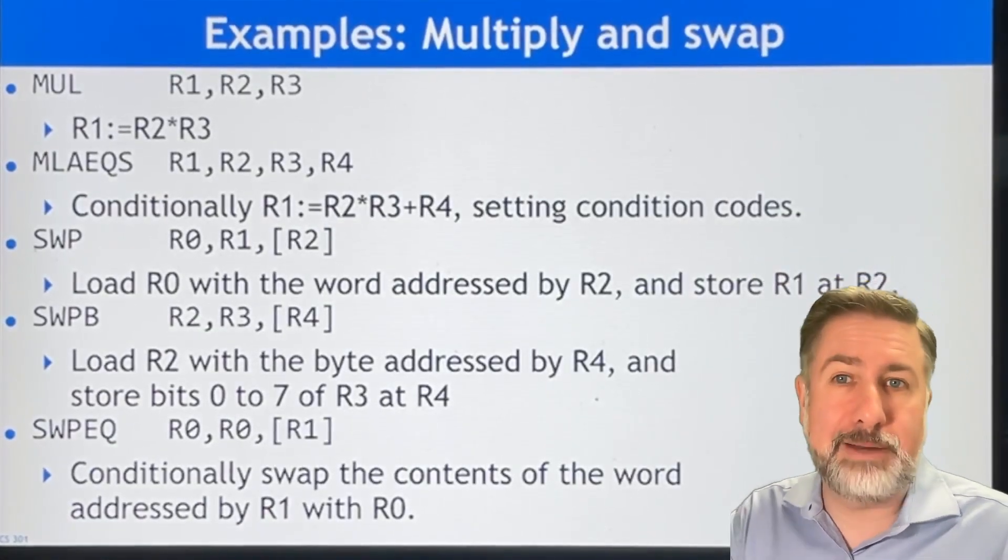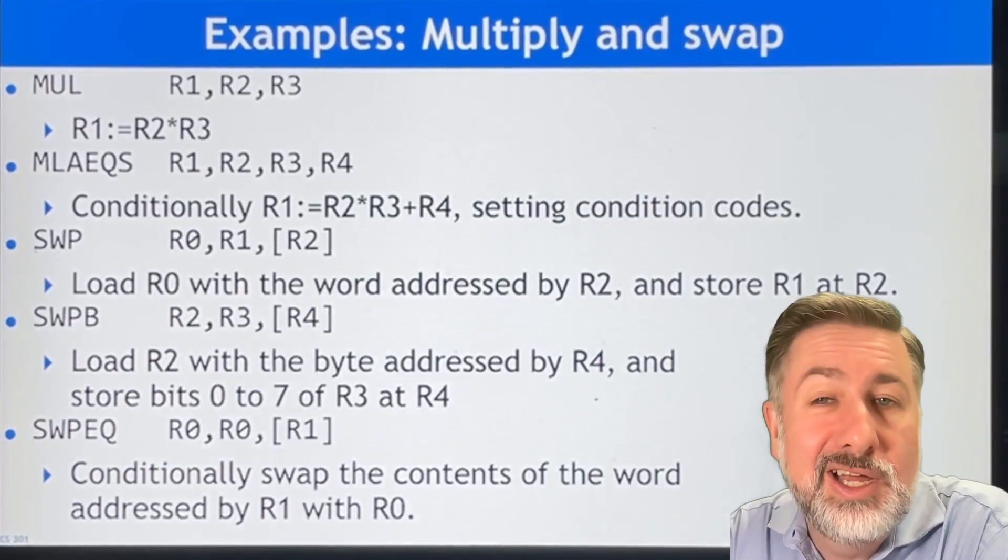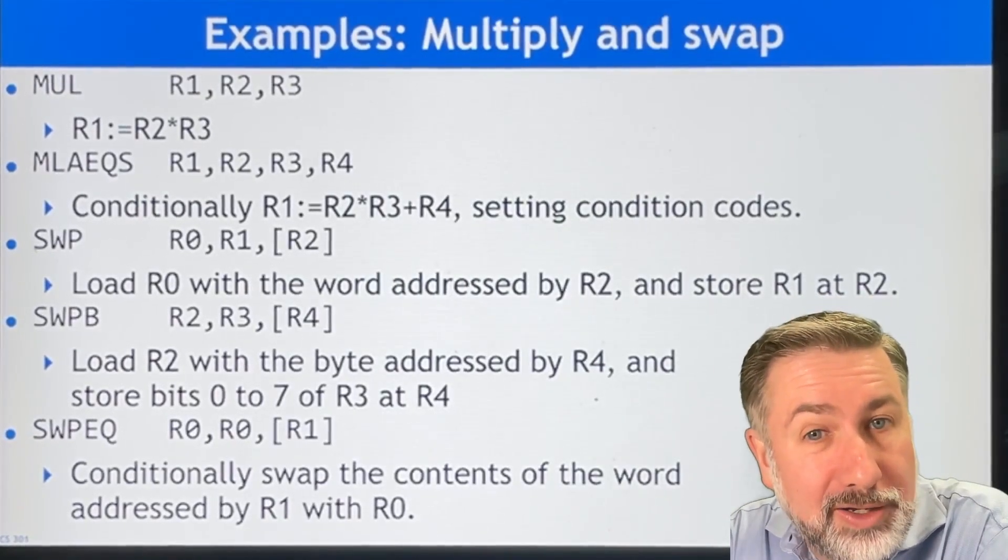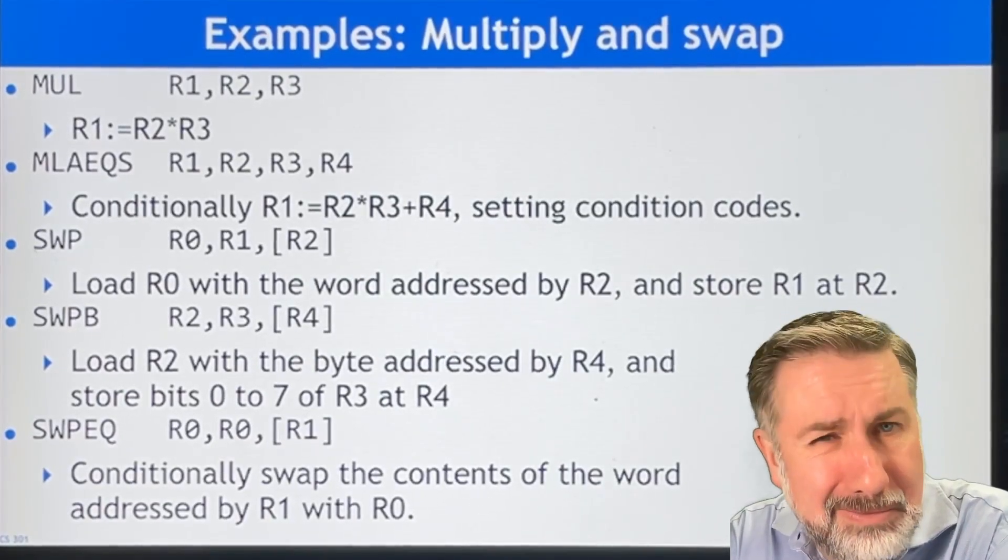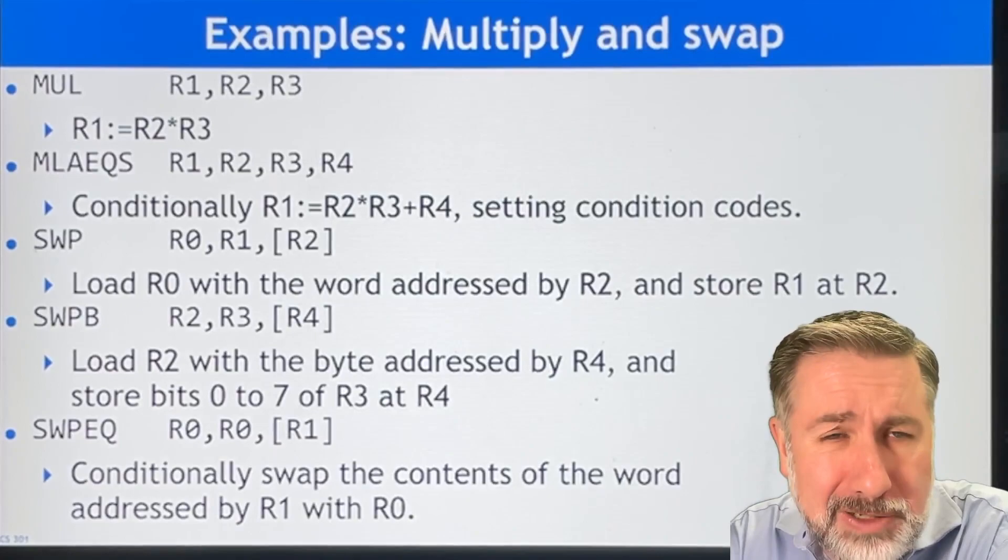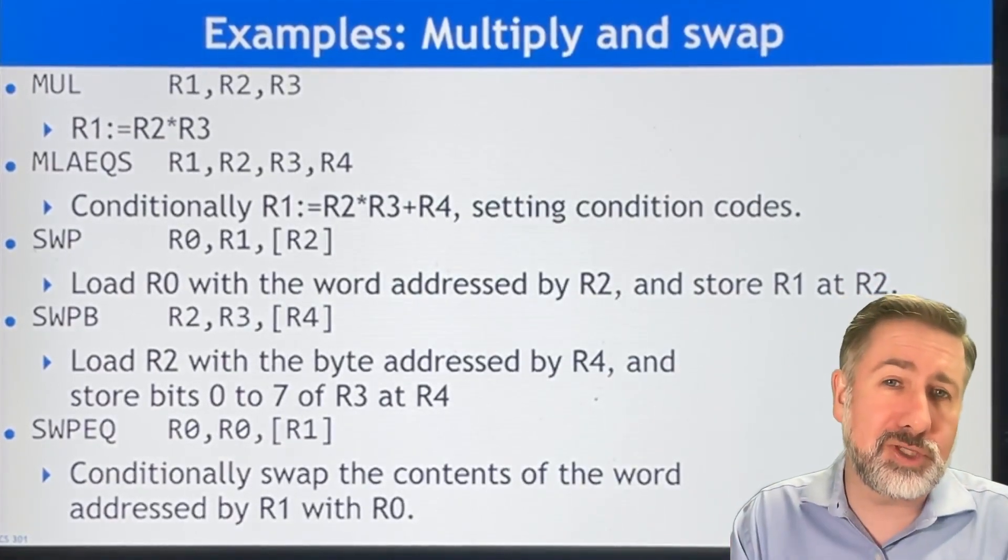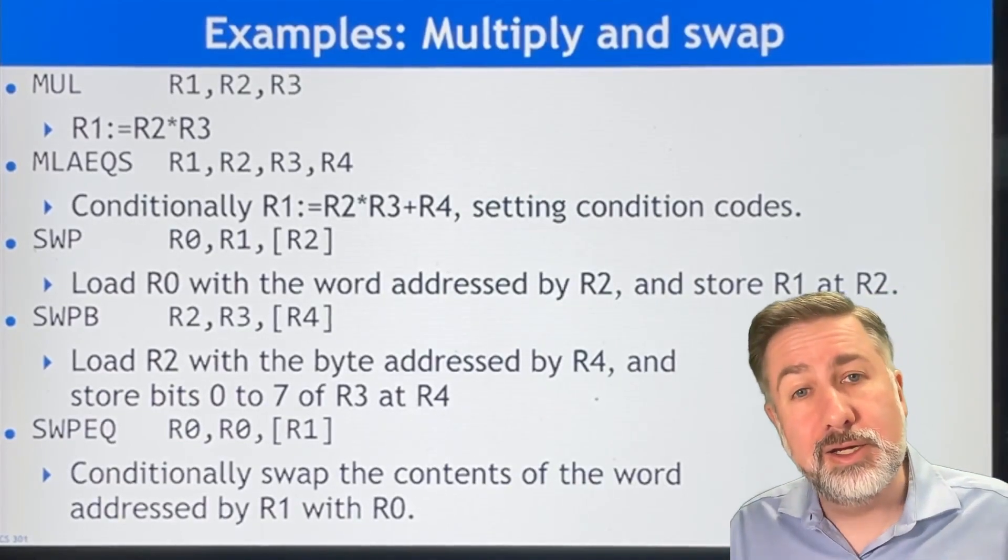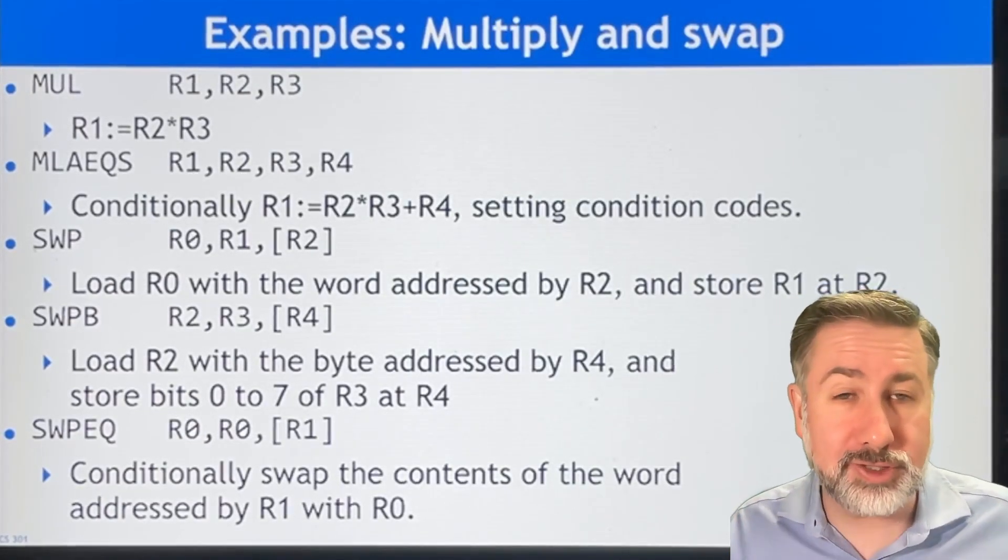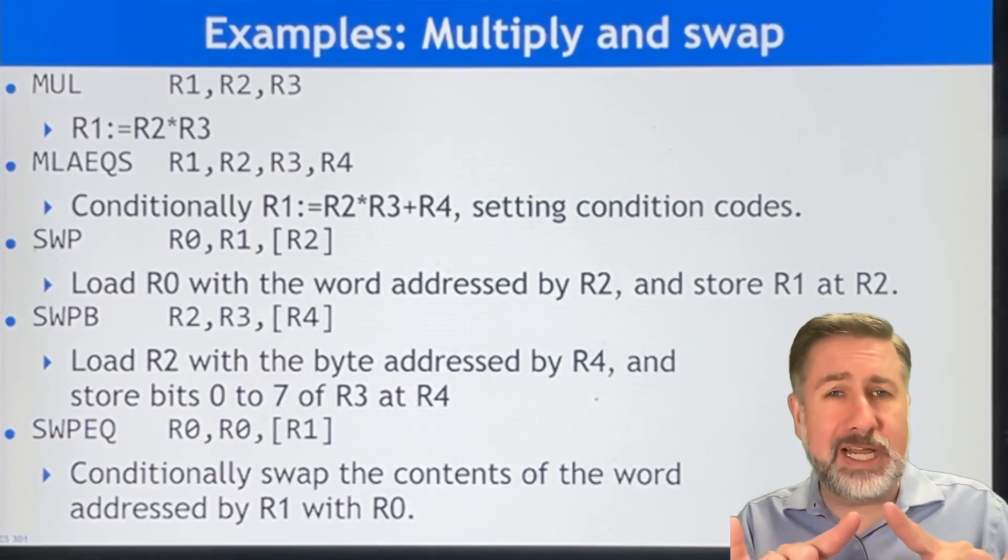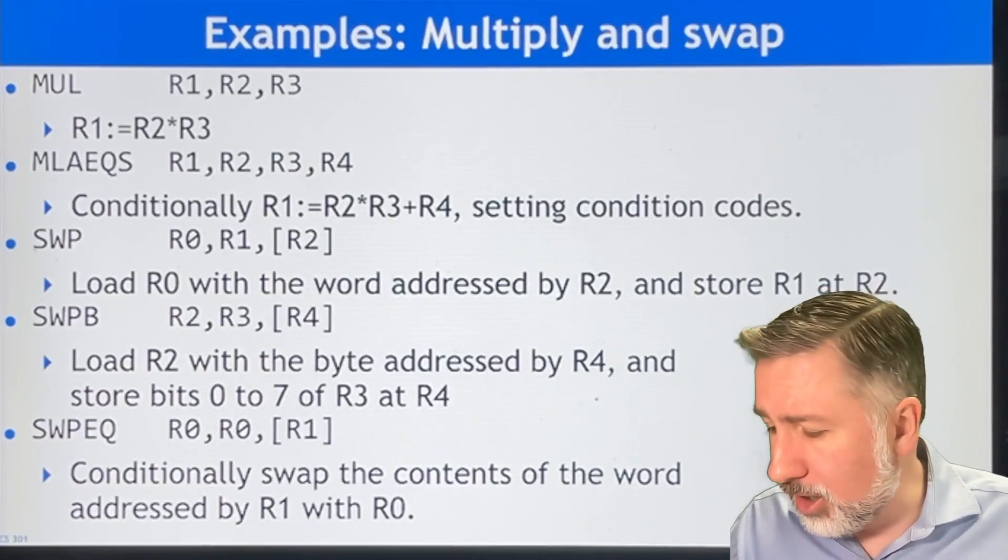So multiply, for example, you can multiply R1, R2, R3 and that just says into register R1 multiply R2 and R3 and put the results. Now you'll remember that multiplication in MIPS you had to have two registers for the result because the result could be much larger than two registers together. If you take two 8-bit numbers, the result can be as big as 16 bits. But in ARM, it doesn't worry about that.